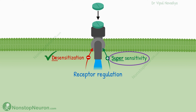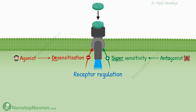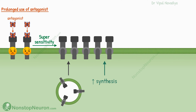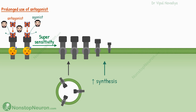Next is supersensitivity or upregulation. Desensitization occurs in response to excessive agonists; in contrast, supersensitivity occurs due to excessive antagonists. The antagonist has no activity of its own and also prevents the activity of agonists, so under its influence receptors stay inactive. If such a situation persists for a long time, cells become supersensitive — this happens by increasing the number of receptors through exocytosis of stored receptors and increased synthesis. There is also upregulation of second messengers.